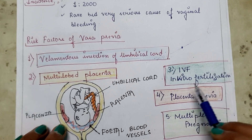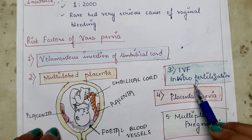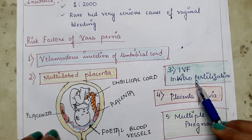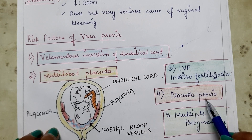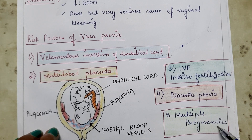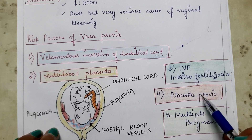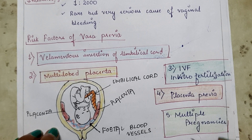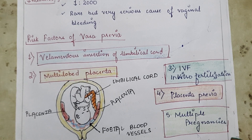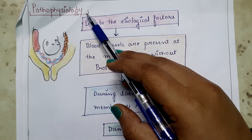The next risk factor is IVF, that is in vitro fertilization — the process of artificial fertilization. In this case, there are chances of abnormal placentation or abnormal attachment of the placenta, which creates chances of Vasa Previa. Next is placenta previa, where the placenta is attached at the lower uterine segment. Finally, multiple pregnancies such as twins or triplets leave insufficient space in the upper uterine segment, increasing chances of placental implantation at the lower uterine segment.